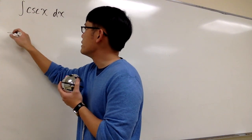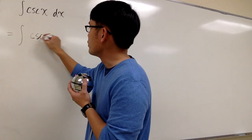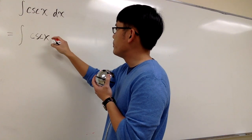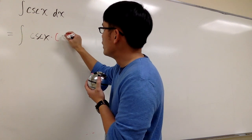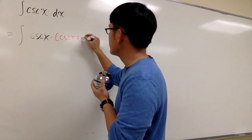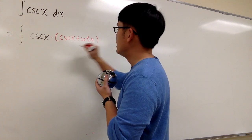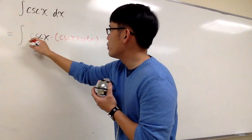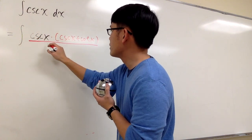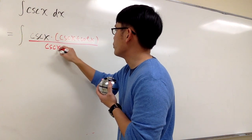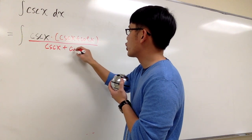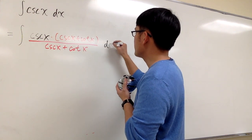So, the trick is, let's look at this as an integral, and I'm going to put down cosecant x again, but then I'm going to multiply this by cosecant x plus cotangent x on the top, and then also over the same thing, so that way I don't change the value. So, cosecant x plus cotangent x, and then we still have the dx on the side.